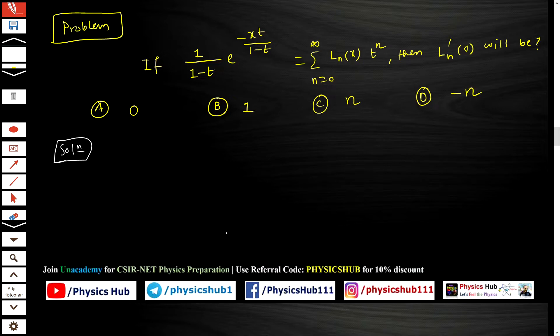Now this problem I gave you as homework: if 1/(1-t) * e^(-xt/(1-t)) equals the sum from n=0 to infinity of ln(x) * t^n, then what will be the value of ln'(0)?